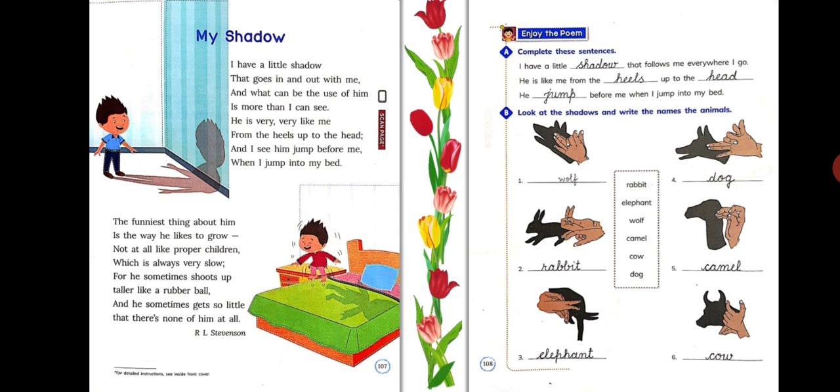The funniest thing about him is the way he likes to grow, not at all like proper children, which is always very slow. For he sometimes shoots up taller like a rubber ball, and he sometimes gets so little that there is none of him at all.